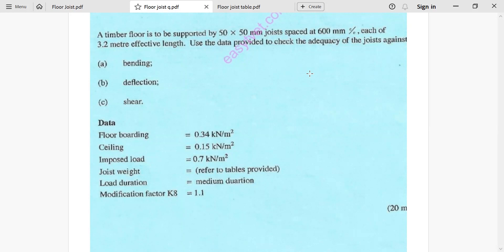The question reads: a timber floor is to be supported by 50 by 50 millimeter joists spaced at 600 millimeter center to center, each of 3.2 meter effective length. We are required to use the data provided to check the adequacy of the joist against bending, deflection and shear. Among the data given is floor boarding 0.34 kilonewton per square meter, ceiling 0.15, imposed load 0.7, and for the joist weight we have to use the tables to calculate. Load duration is medium duration, and modification factor K8 is given as 1.1.